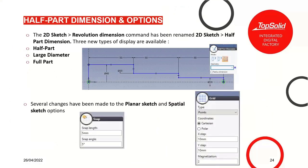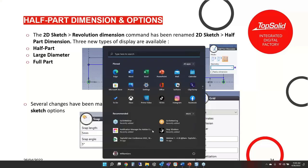The 2D sketch revolution dimension command has been renamed to half part dimension — just to help people coming from different software recognize the command. On top of that, three new types are available: half part, large diameter, and full part, giving you better control over how you dimension your half-part values.